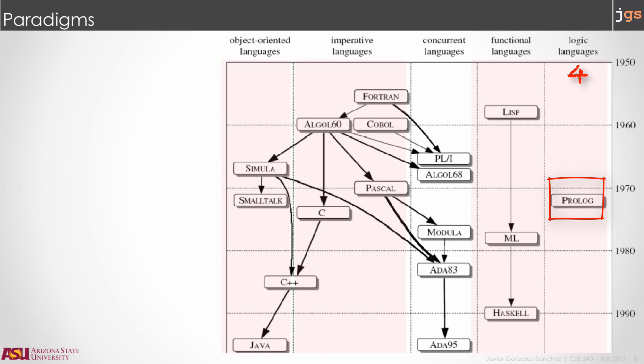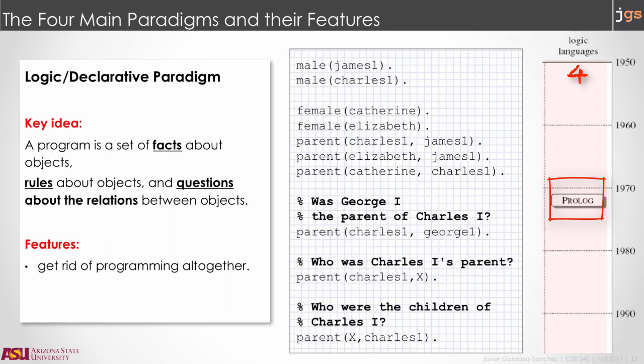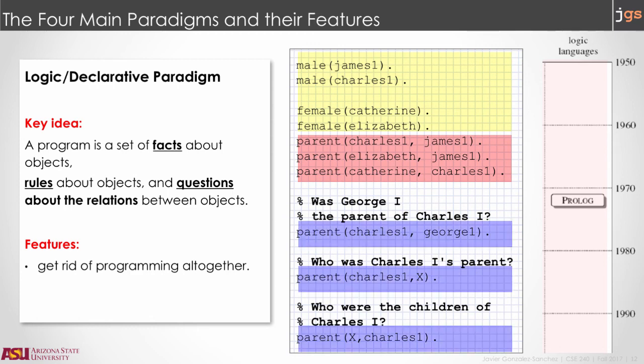Finally, the key idea in the logic paradigm, also called the declarative paradigm, is that a program is a set of facts, rules, and questions. So there are no data types, no methods, or conditions, or loops. So a program in this paradigm is something like this. The lines in yellow are facts. The lines in red are rules, and the lines in blue are questions. And the lines that start with the percentage symbols are comments.